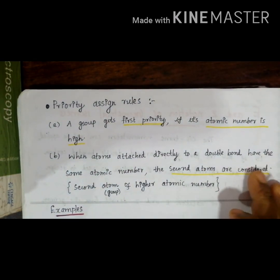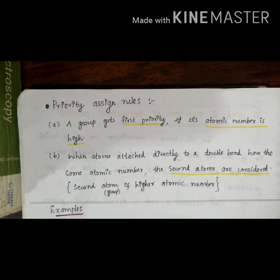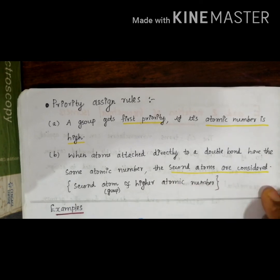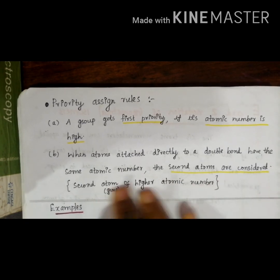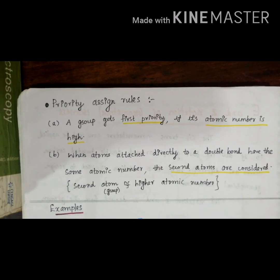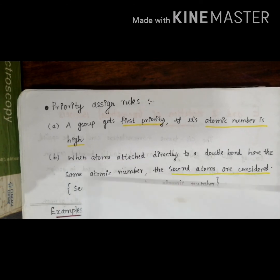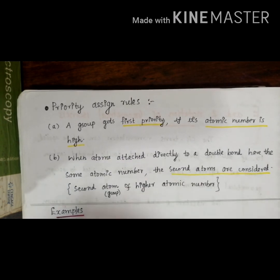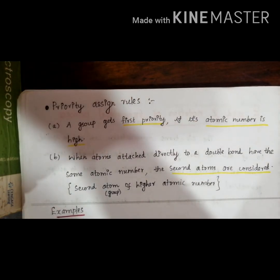This is rule two: when atoms attached directly to a double bond have the same atomic number, the second atoms are considered. If the second atoms are also identical, we continue to the third atom, and so on — continuing until a priority number can be identified. This is the complete priority-assigning rule based on atomic number.